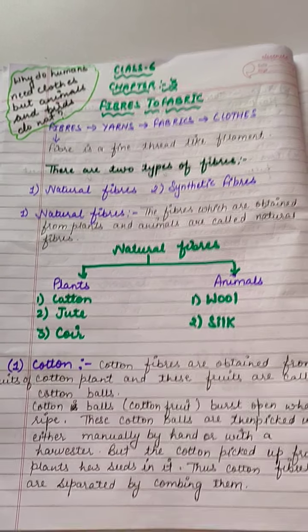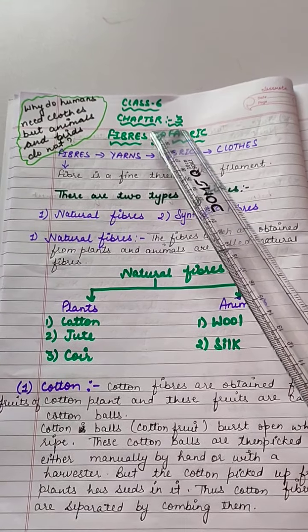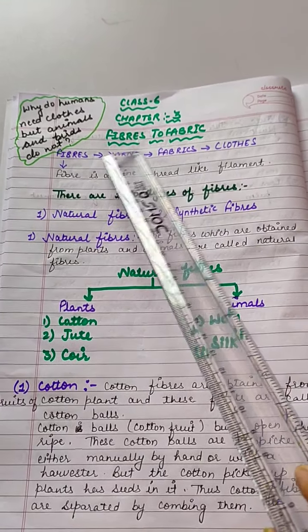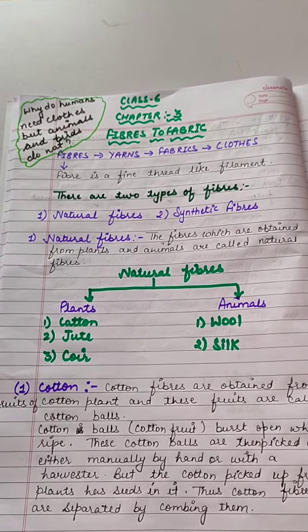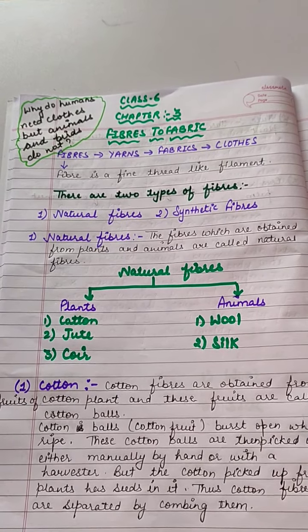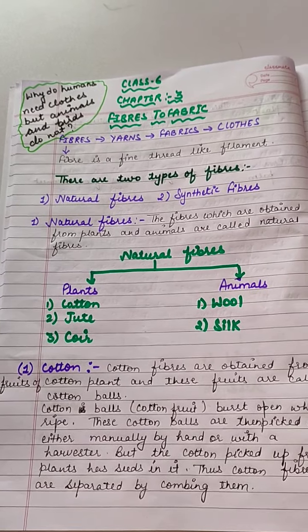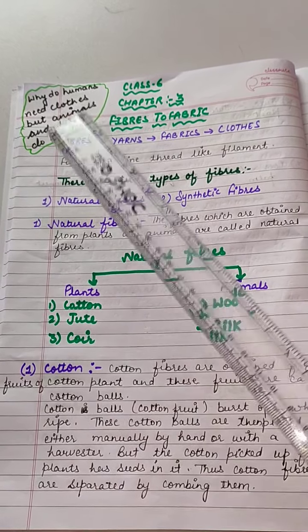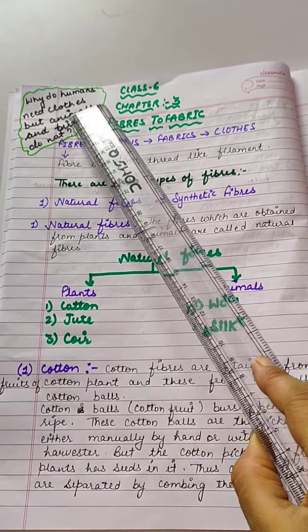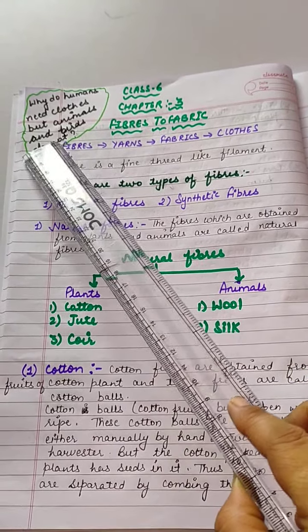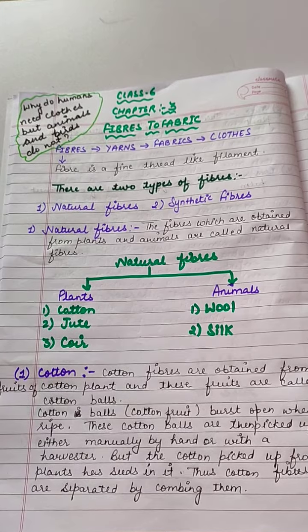Today we are going to start our new chapter, that is chapter number 3: Fibers to Fabrics. Before starting this chapter I want to ask a question — why do humans need clothes but animals and birds do not? Do you know that?